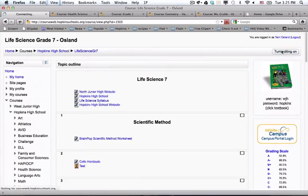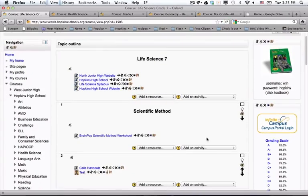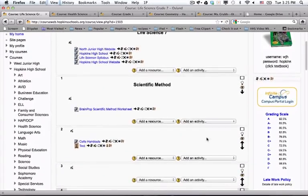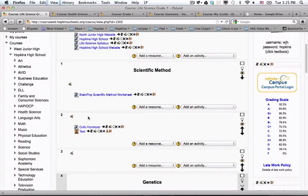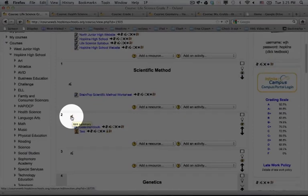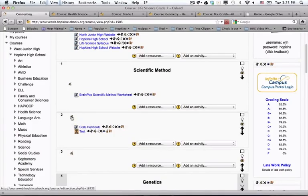I'm going to go up to my turn editing on button, and then I'm going to add evolution as a unit for block number two, because that one's not in there yet. There will, by default, be an edit the summary icon. So I'm going to click on that.